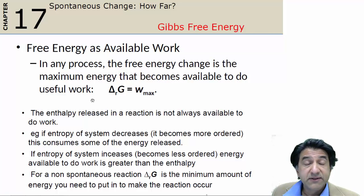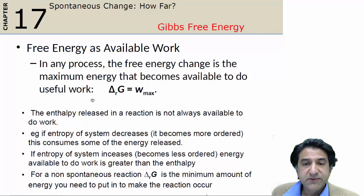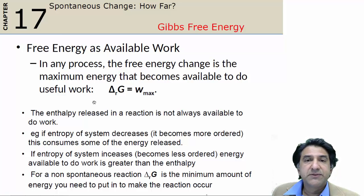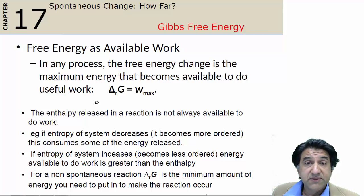If delta G is negative, it's exergonic, meaning to say that it's work-producing. Delta G is negative, and the amount of work that you can get out of that is the positive amount of that. So if delta G is minus 10 kilojoules, you can get positive 10 kilojoules of work out of that reaction.